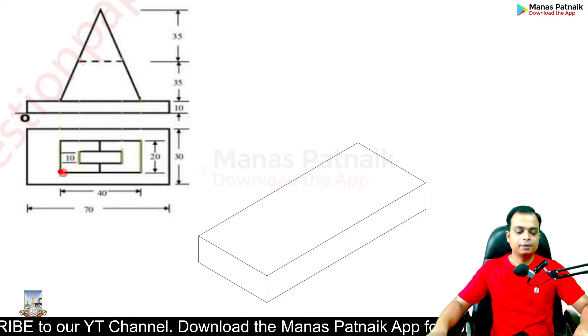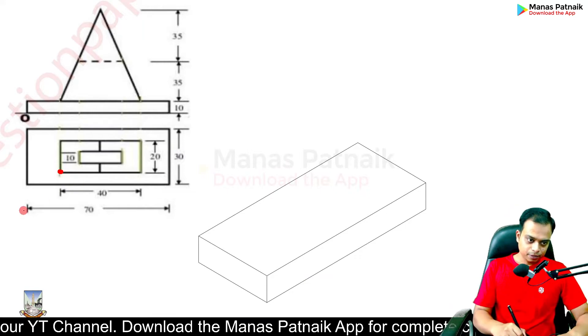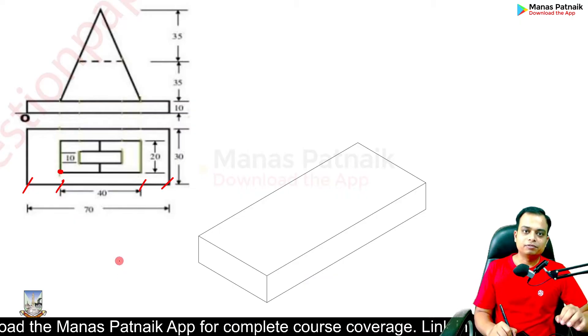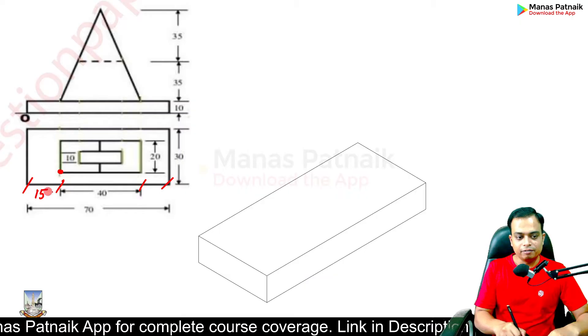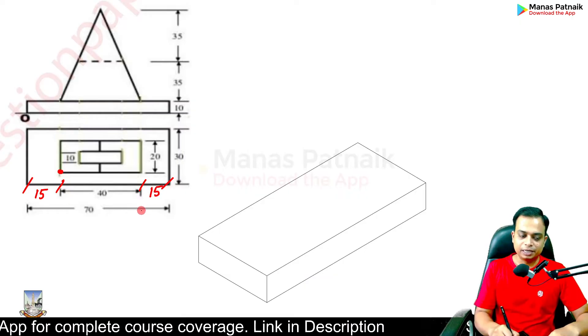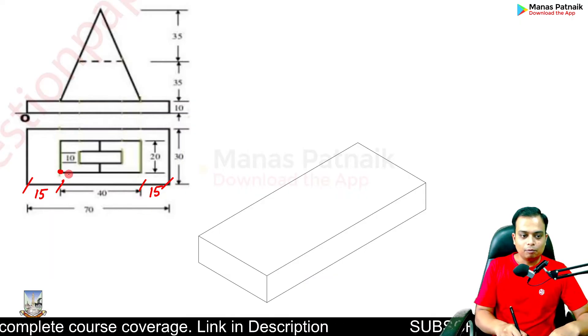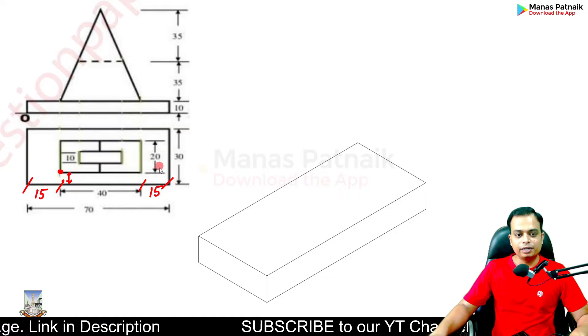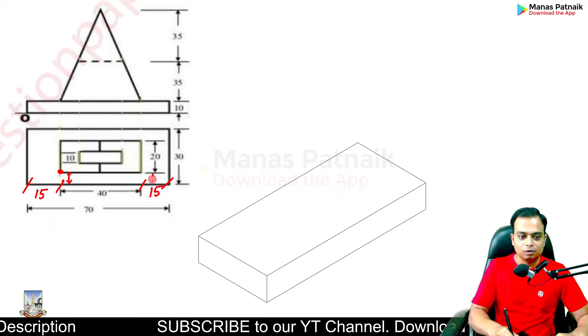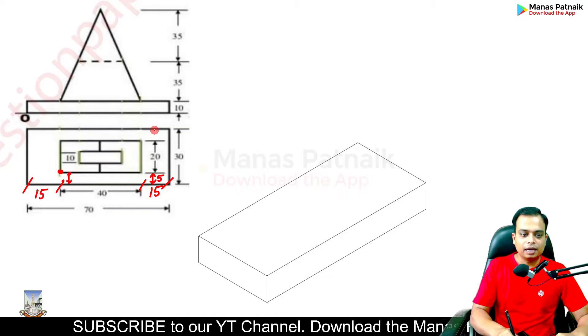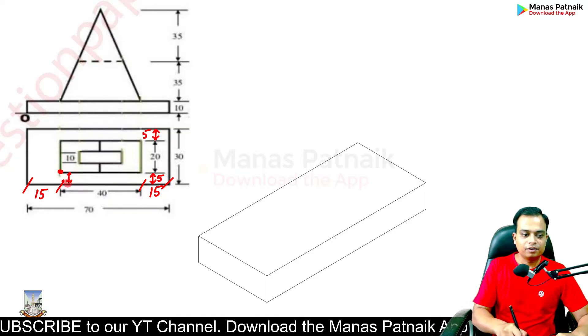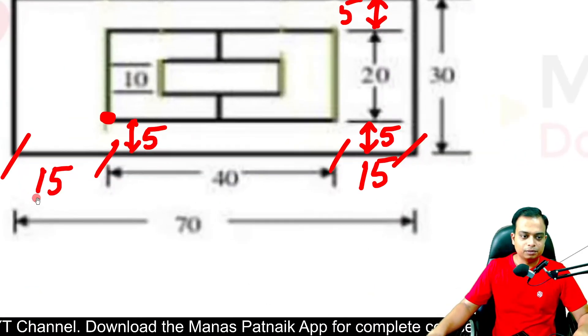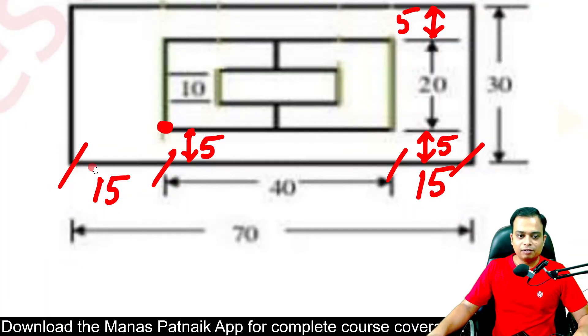How do we locate this point? Can be done very easily. This in totality is 70, out of which this much is 40. 70 minus 40 gives you 30, that means half of that 30 will be here, another half will be here - so that's 15 and 15. Secondly, what is the distance between these two points? 30 minus 20 will give you 10, that means half of 10 that is over here is 5, and the remaining half is here, 5.